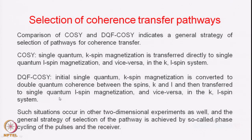The result of this is that the diagonal peak also gets in-phase character and has absorptive line shapes. The cross peaks remain anti-phase and also have absorptive line shape. Therefore, both the diagonal and cross peaks have anti-phase magnetization and absorptive line shapes, which substantially improves the resolution in the spectrum, and peaks lying very close to the diagonal can be observed in double quantum spectroscopy.